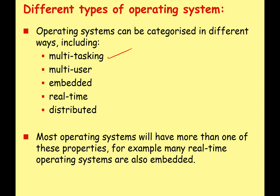You could have multitasking, multi-user, embedded, real-time, or distributed operating systems. Please bear in mind there are a lot of gray areas and a lot of overlap, so most operating systems will have more than one of these properties. For example, many real-time operating systems are also embedded operating systems as well.